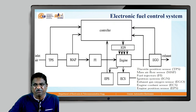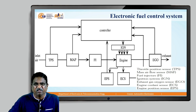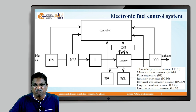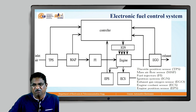This is the block diagram of the electronic fuel control system. Initially there is an air inlet at the input of the TPS, that is the throttle position sensor. The output of TPS is given to the MAF, that is the mass air flow sensor, and from both TPS and MAF the outputs are given to the controller. The mass air flow output is also given to the fuel injectors (FI), and according to the mass air flow and throttle position information, the fuel injectors provide an output signal to the engine.